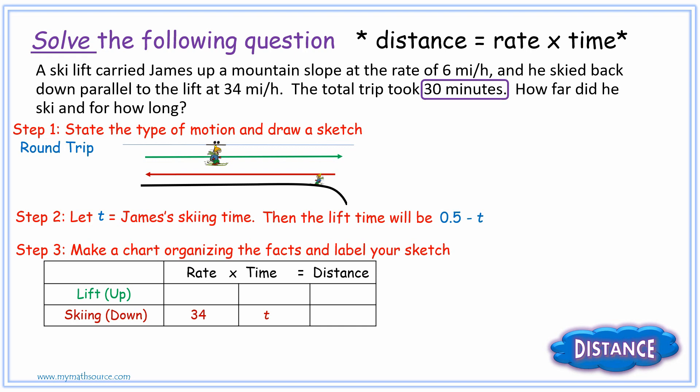And so since distance, as we saw in our very beginning, is equal to rate times time, that's simply 34 times T or 34T. We can do the same thing with the lift going up. We find out what our rate is. Our rate is 6 miles per hour as seen in the question. And our time, we just found that expression to be a half an hour, subtract whatever his skiing time is, or 0.5 subtract T.